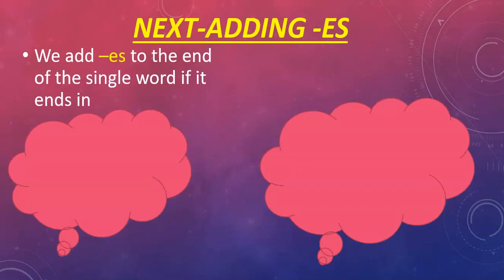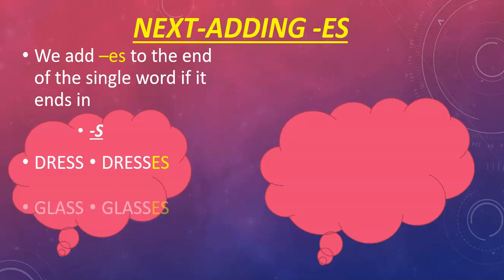Next, we're looking at adding e s. We add e s to the end of a word if it ends in s. For example, dress becomes dresses. We have to do that because dress ends in s already. So if we were to add another s onto dress like we normally would with the ordinary words, it would look really funny. Same with glass. We can't just add an s onto glass to make it plural. So we have to add e s instead.